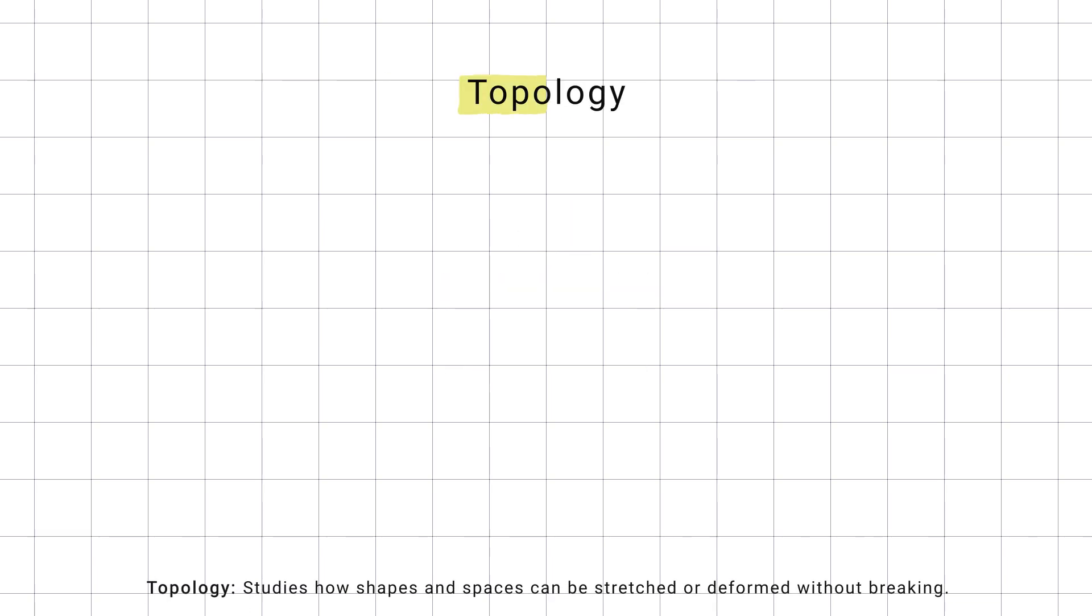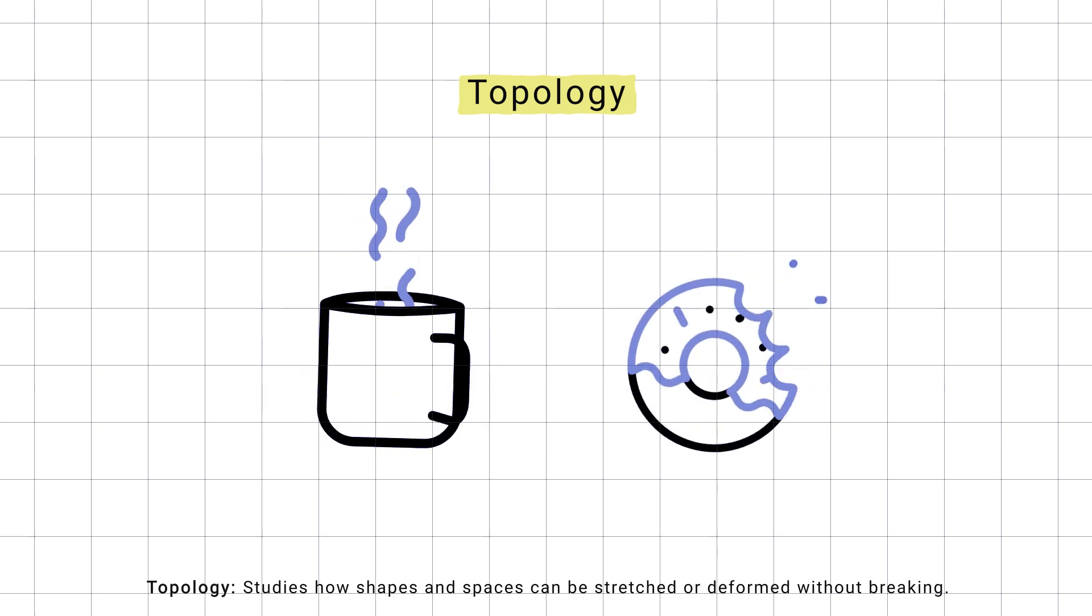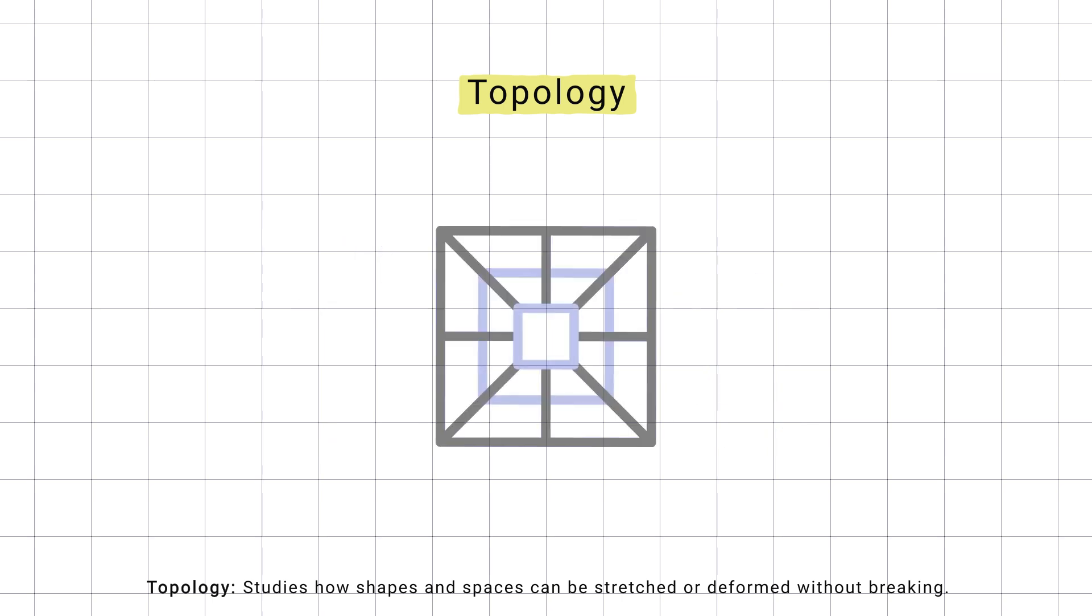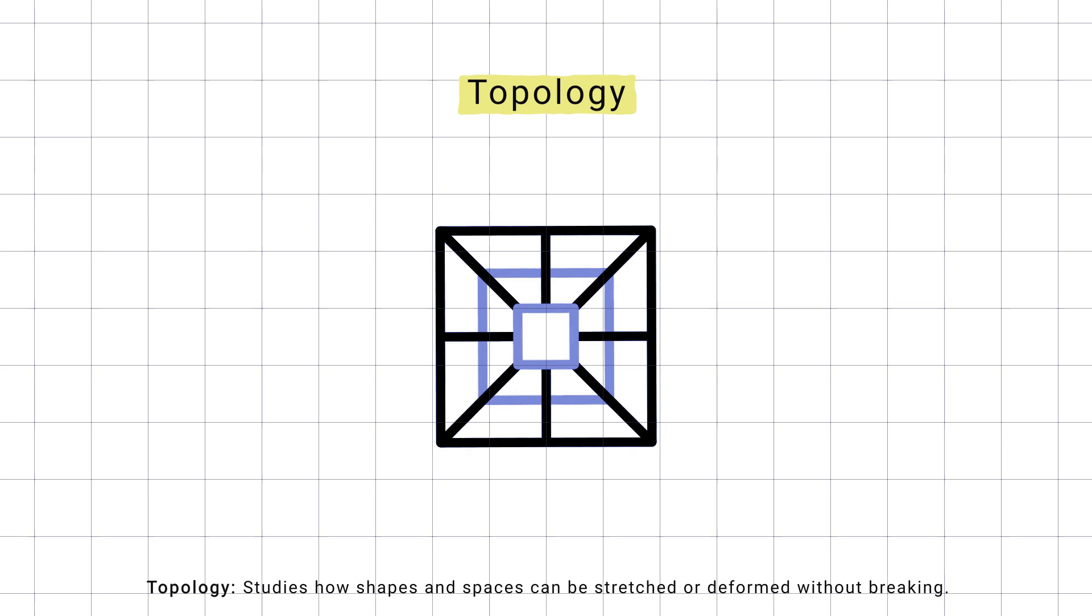And for the real mind-bending stuff, there is topology. Ever heard that a coffee mug and a donut are technically the same shape? That's topology for you. It studies the properties of space that stay the same even when things stretch or bend.